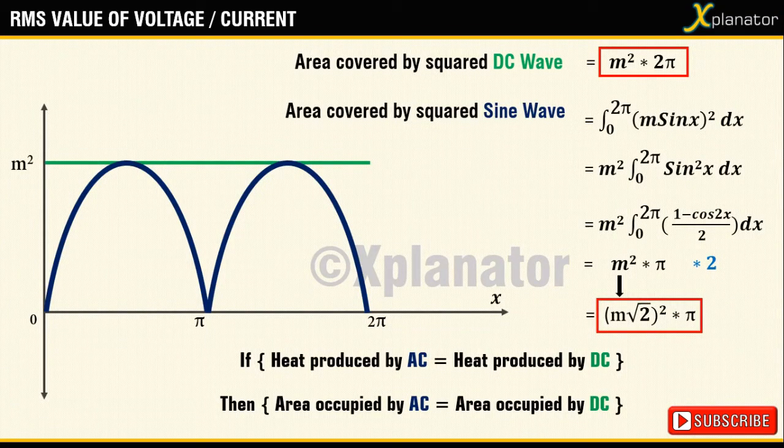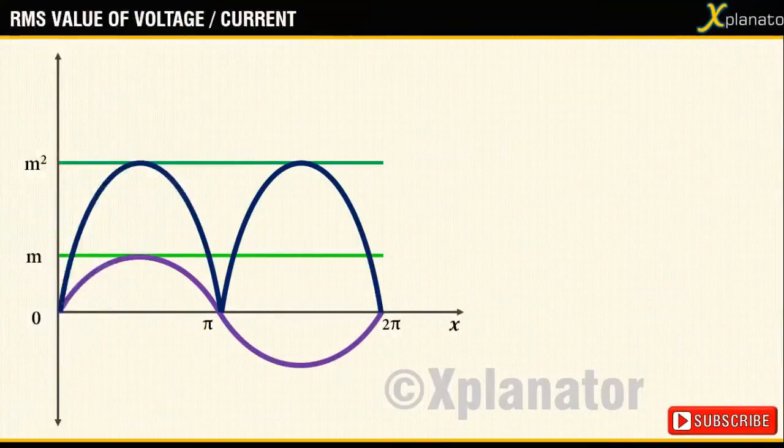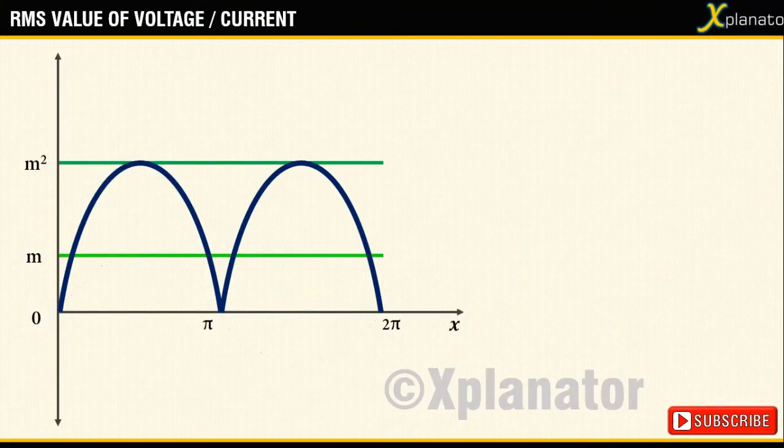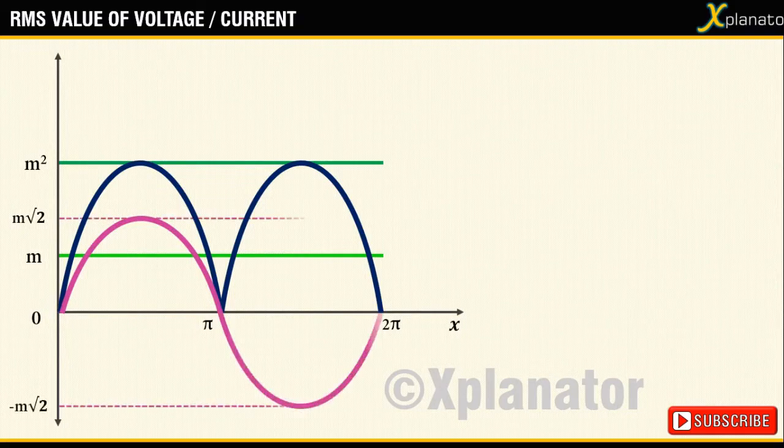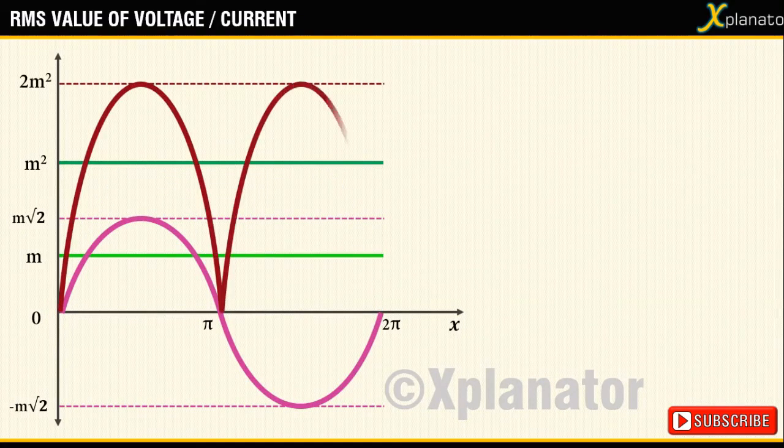So taking this assumption, let us reconstruct the graph. The magnitude of the sine wave is m√2, so when you square it, it becomes 2m².